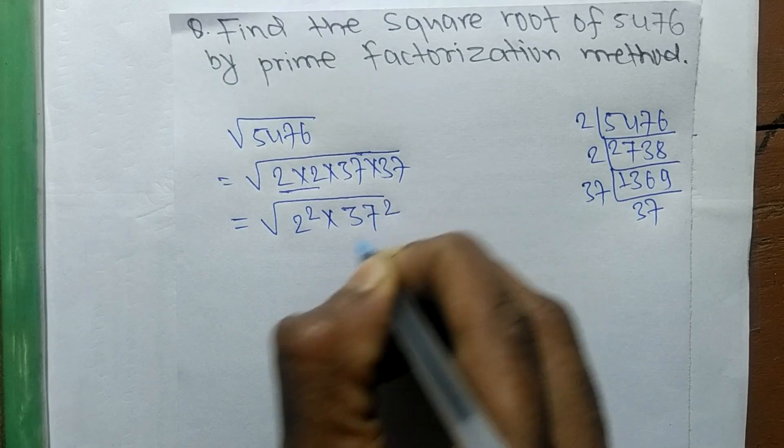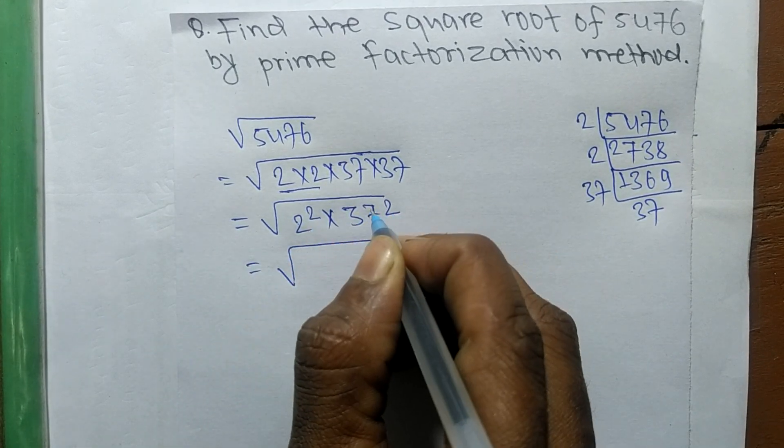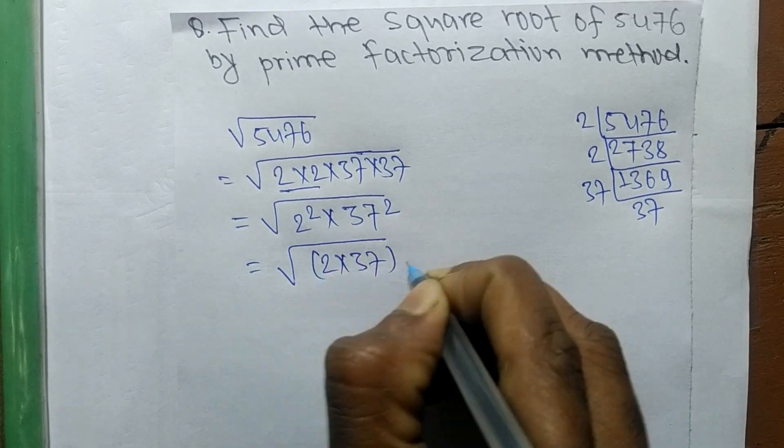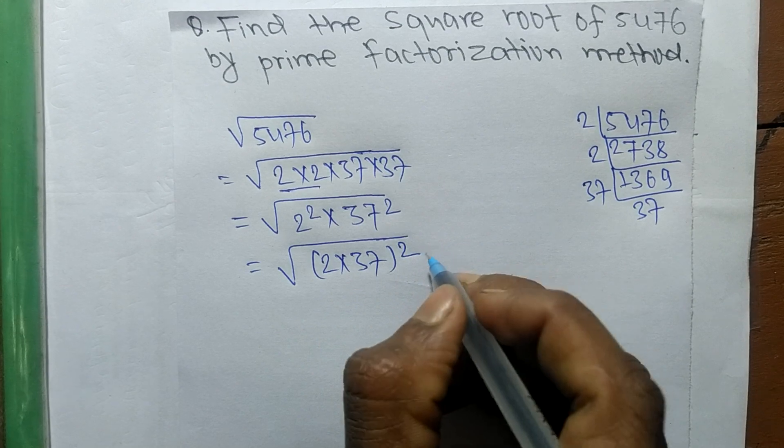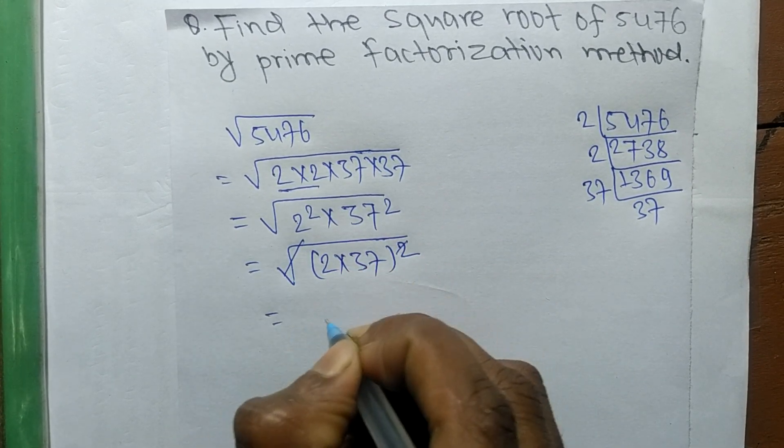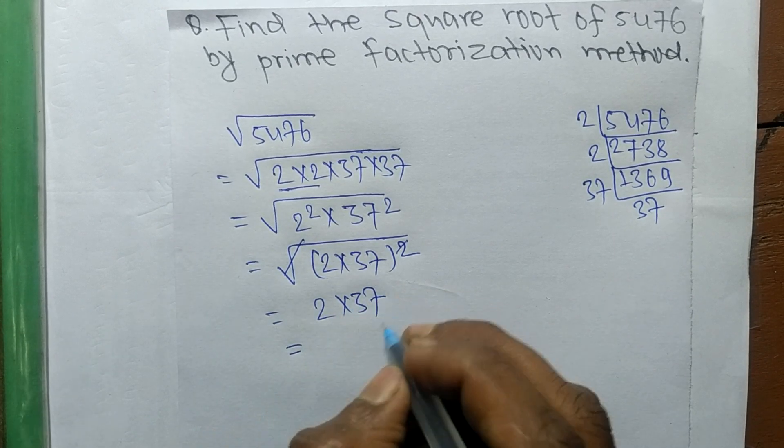So a square is present in both, so we make it 2 into 37 whole squared. So a square and a square would cancel each other, so the remaining part is 2 into 37.